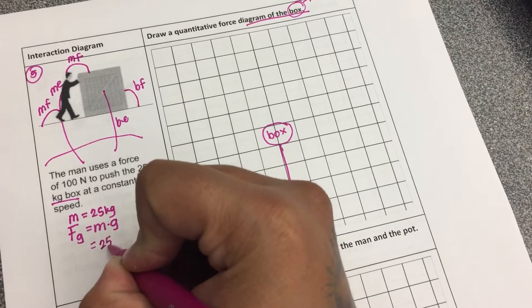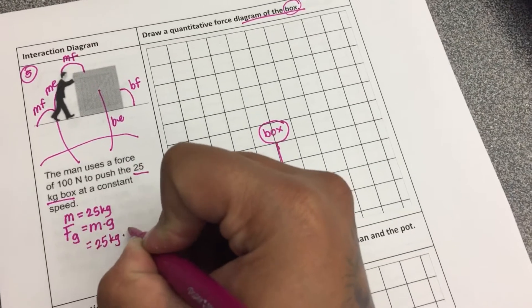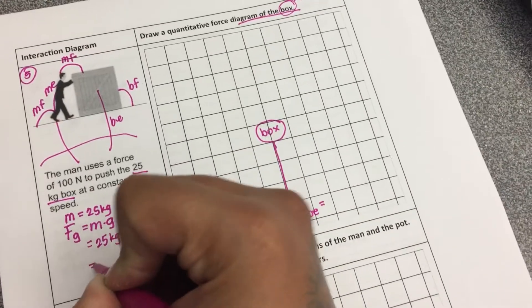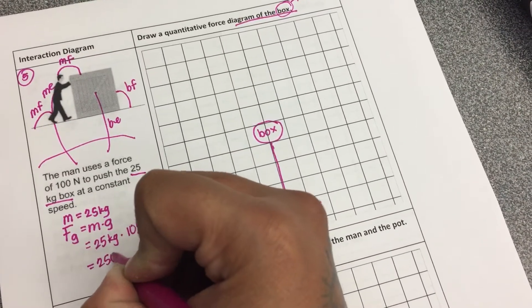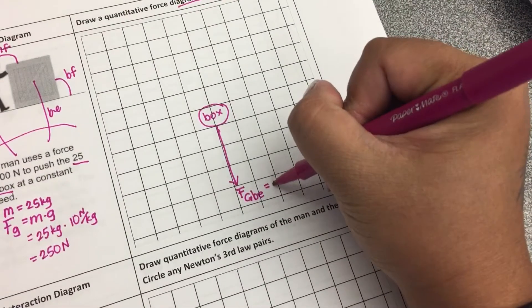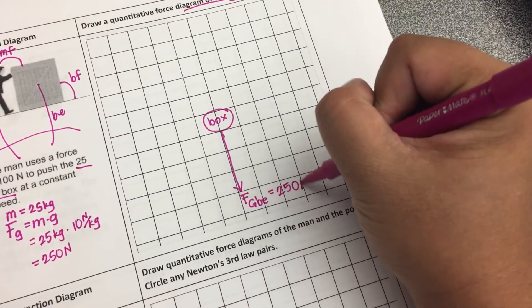which is 25 kilograms times 10 newtons per kilogram, which is 250 newtons. So the box is 250 newtons.